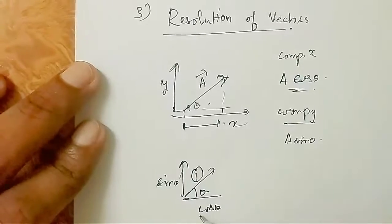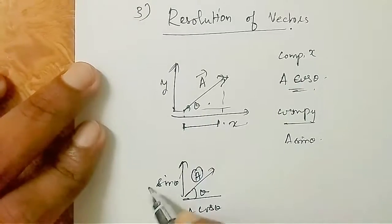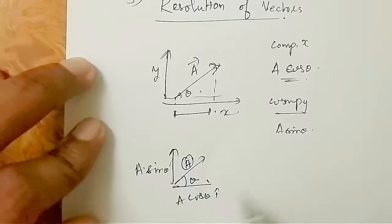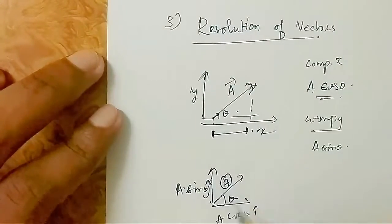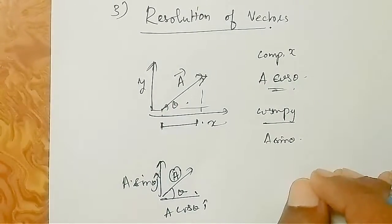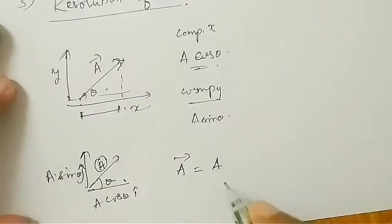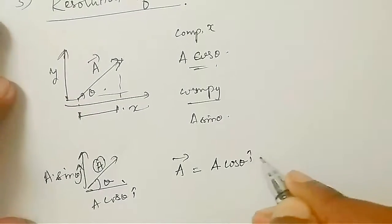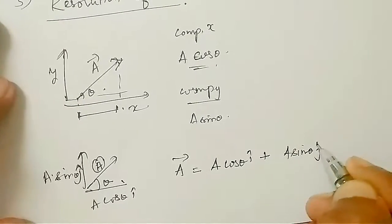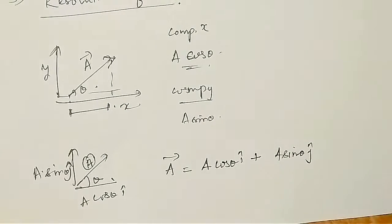This is the y-component and this is the x-axis component. In unit vector notation, vector A equals A cos theta times the i-axis unit vector plus A sin theta times the j-axis unit vector.